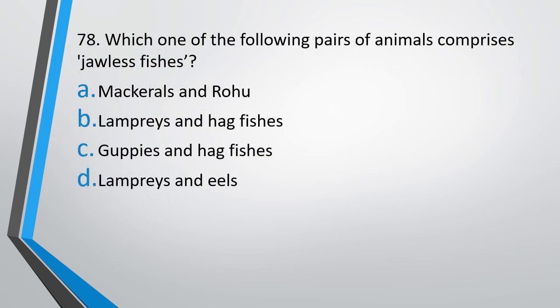Question number 78. Which one of the following pairs of animals comprises jawless fishes — mackerel and rohu, lamprey and hagfishes, guppies and hagfishes, or lampreys and eels? The correct answer is option B — lamprey and hagfishes are jawless fishes.